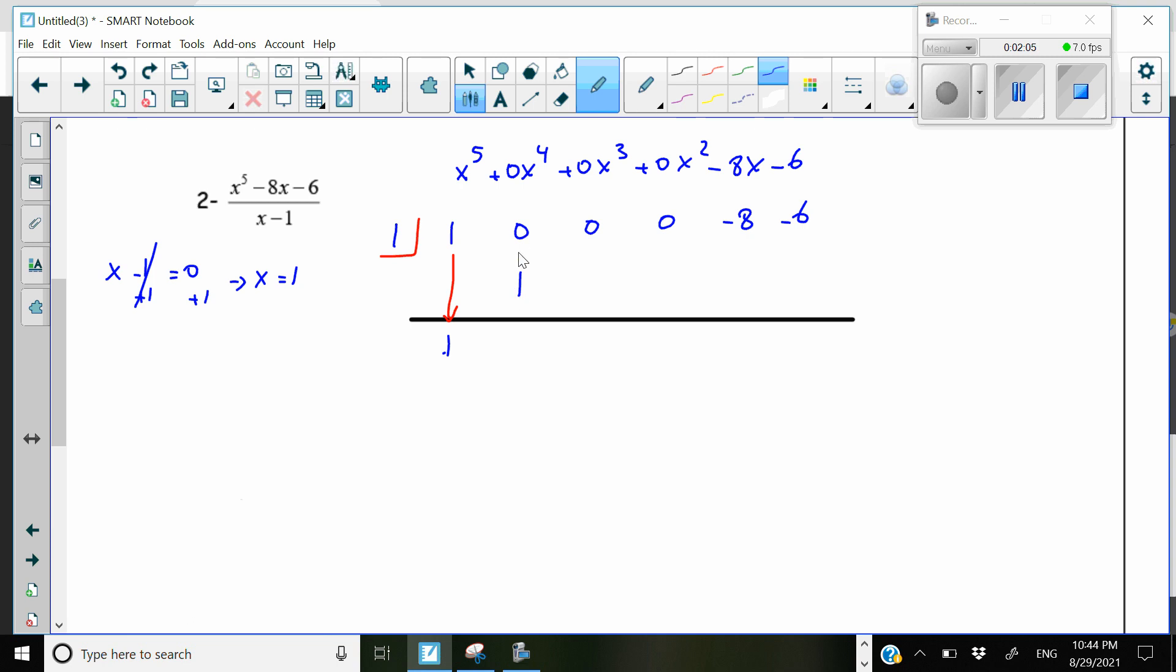Next, again we're going to add these two numbers and then write that here. So 0 plus 1 is 1. Then multiply this number by the corner number again. 1 times 1 is 1.